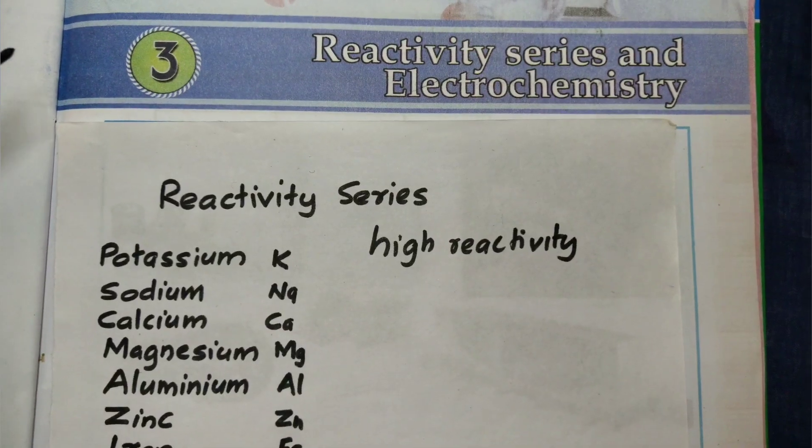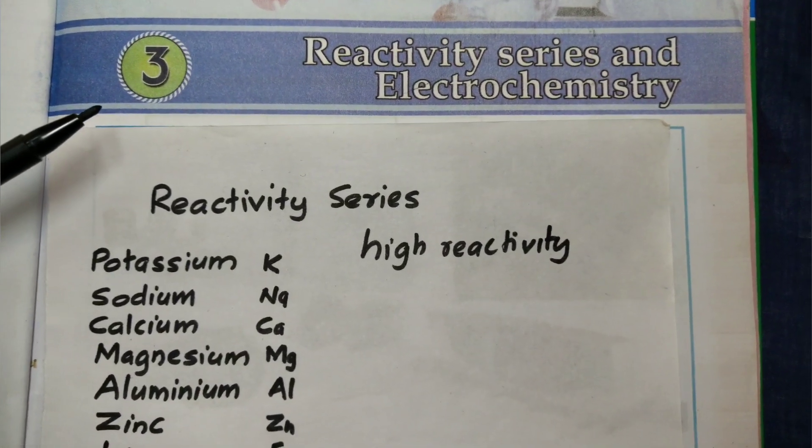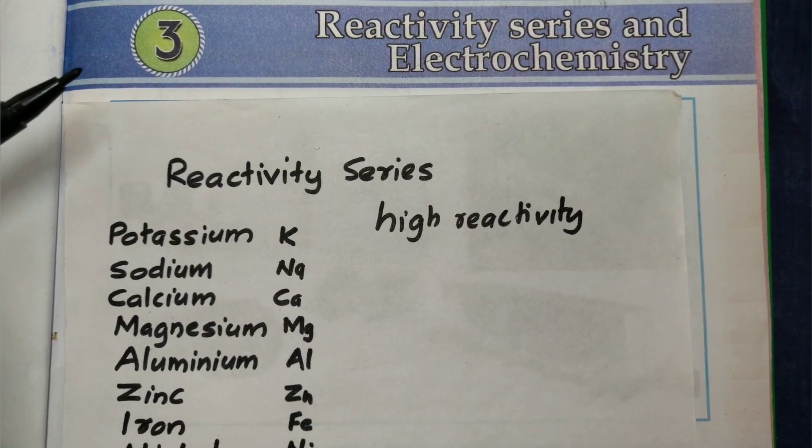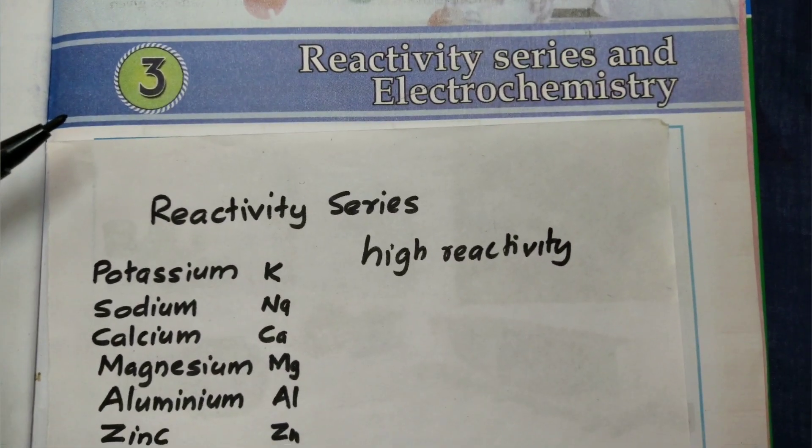Using a copy of the textbook, I will make a video. These videos will show content from the textbook — read it and write it. The title is Unit No. 3: Reactivity Series and Electrochemistry Theory. We will discuss this in this video.